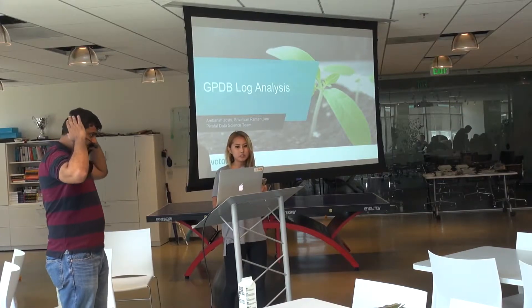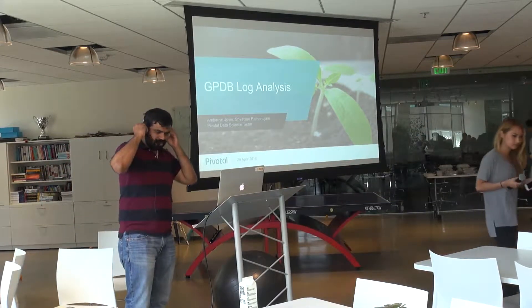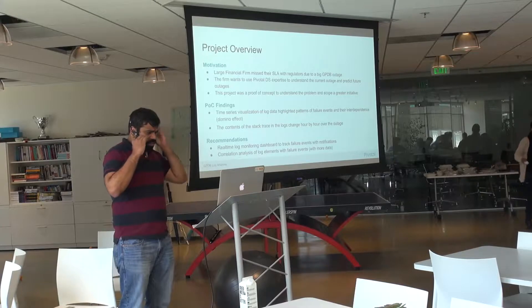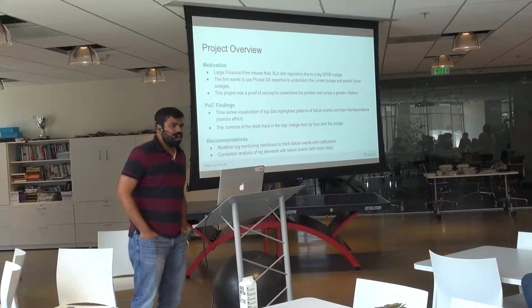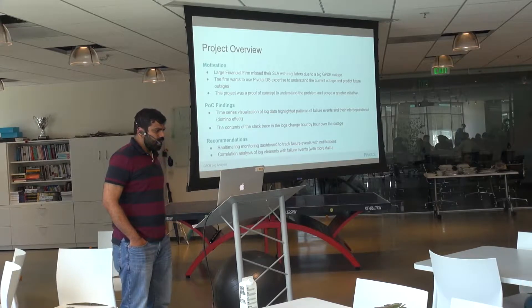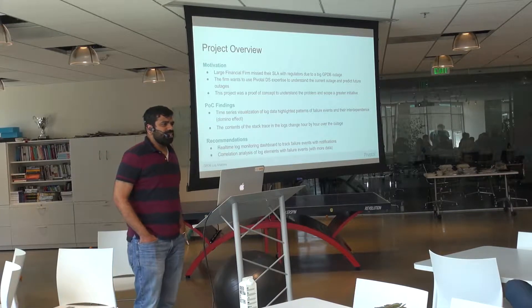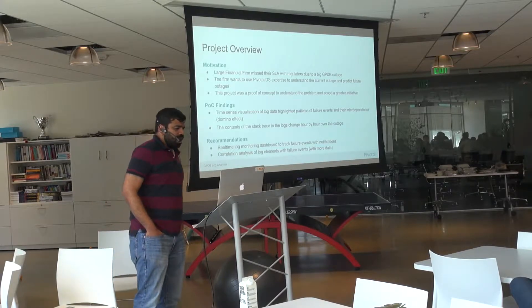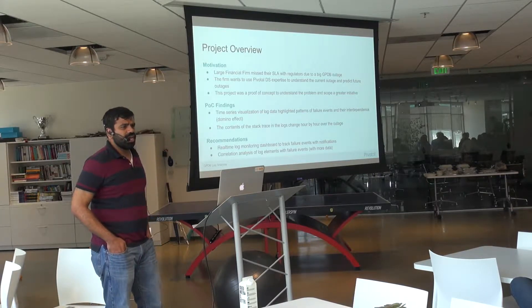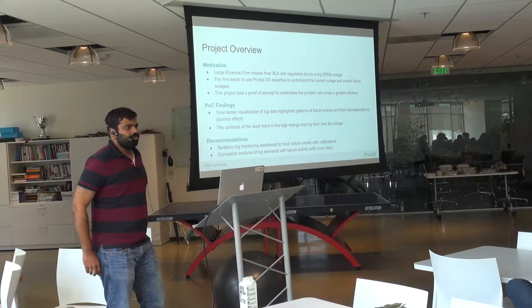Today we have Amvrish talking about Greenplum database log analysis. One of the large financial firms, a good customer of the big data suite, had a big Greenplum outage that caused them to miss some SLAs with the regulators, which is really bad news for them. They wanted to use Pivotal data science to understand what caused the outage and use it to predict future outages — a form of early warning system.